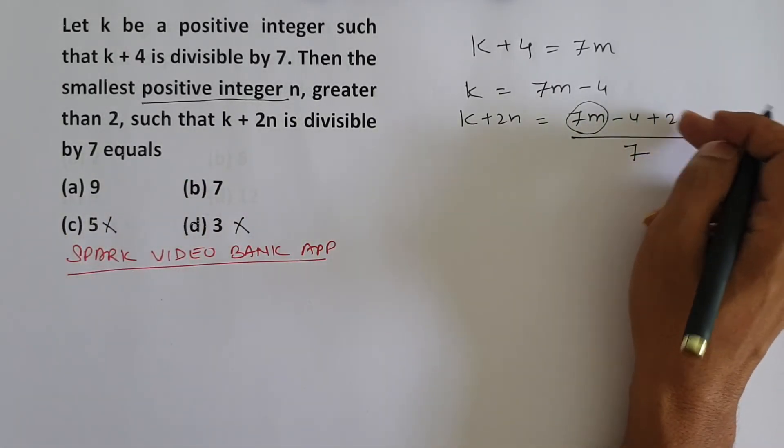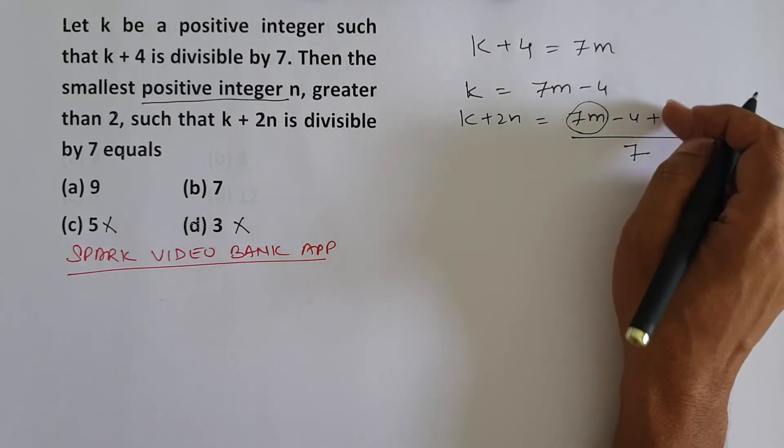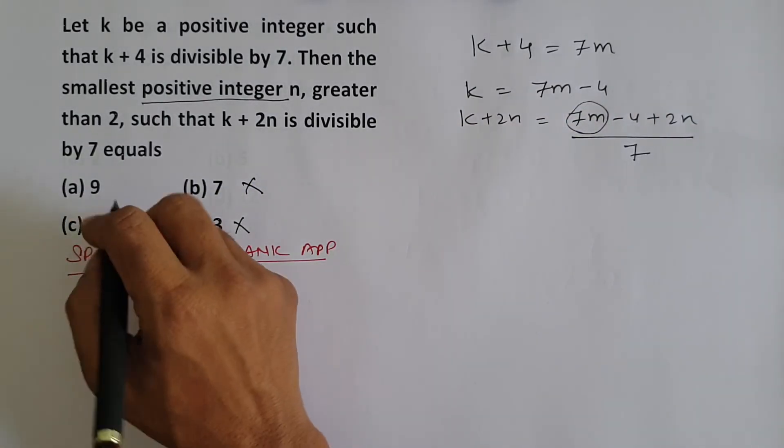7. 7 times 2 is 14 minus 4 is 10. Is 10 divisible by 7? No. That means what will our answer be?